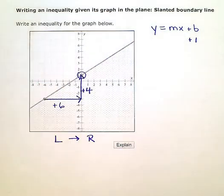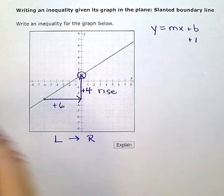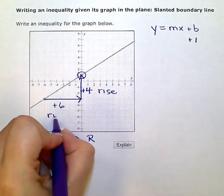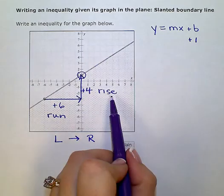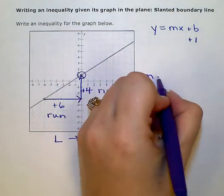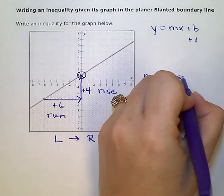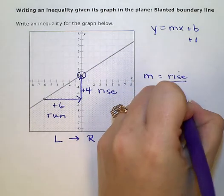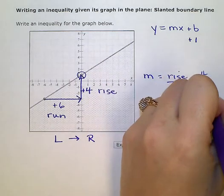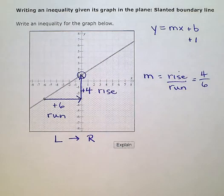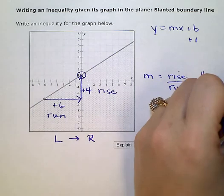This one's my rise, the up and down. This one is the run, the left and right. So rise over run, my slope would be positive 4 over positive 6, which I can simplify or reduce to 2 thirds.